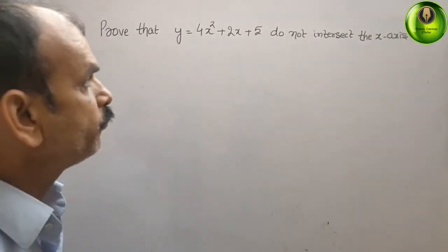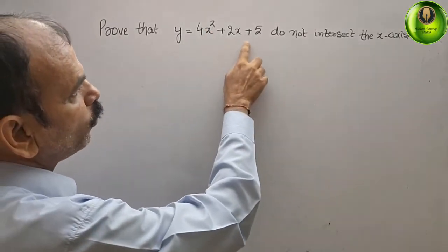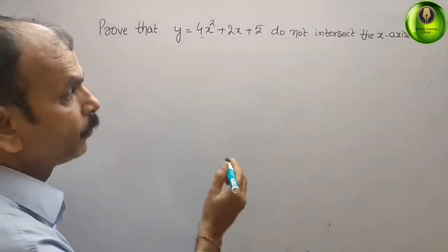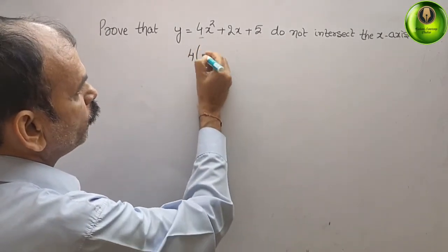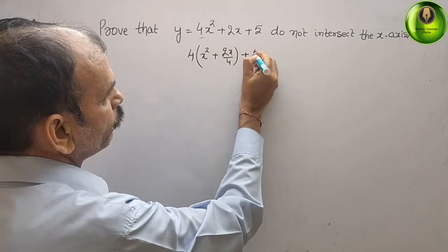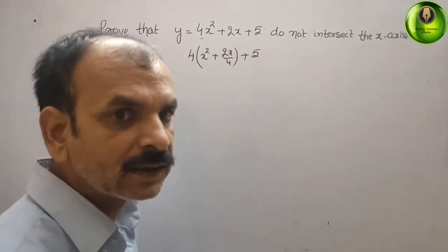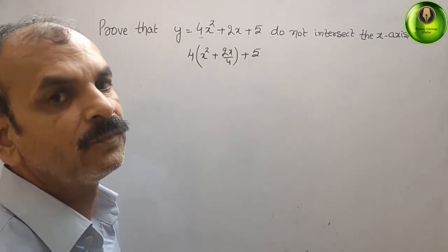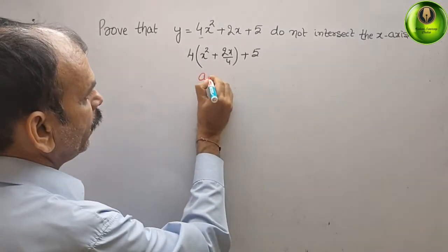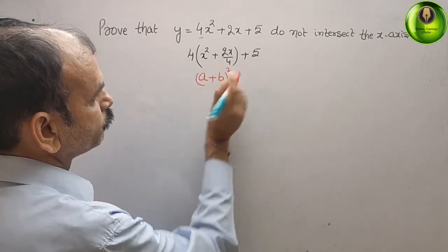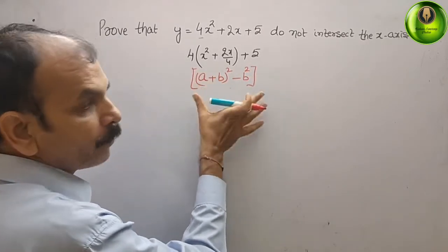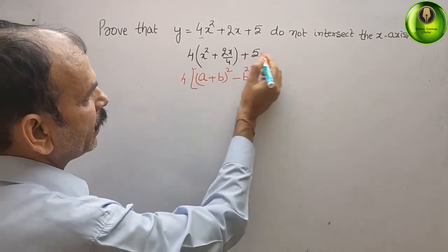We can see here this is 4x² + 2x + 5. Therefore we can take 4 as common — you will get 4[x² + (2x/4) + 5]. Now in the center term, which is positive, we will make it a plus b whole square format: (a + b)² minus b². The big bracket has 4 as common, plus 5.